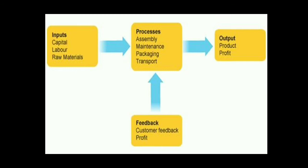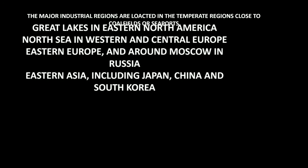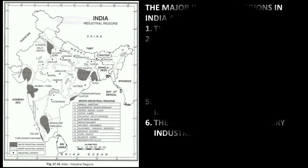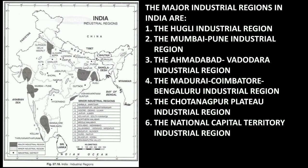Moving on, we have various industrial regions all over the world. These are the places where most industries are located. They include the Great Lakes region in eastern North America, the North Sea coast in western and central Europe, eastern Europe around Moscow in Russia, and eastern Asia including Japan, China, and South Korea.